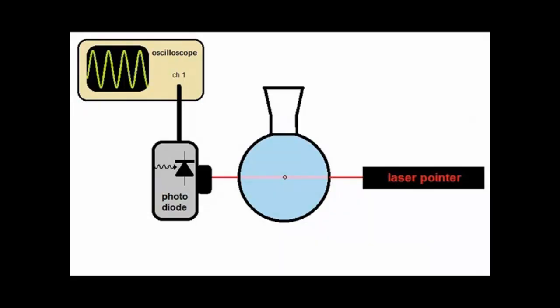So as the bubble gets bigger, it blocks more light, and the intensity goes down. In other words, the intensity of the laser beam at the photodiode is inversely proportional to the bubble radius.